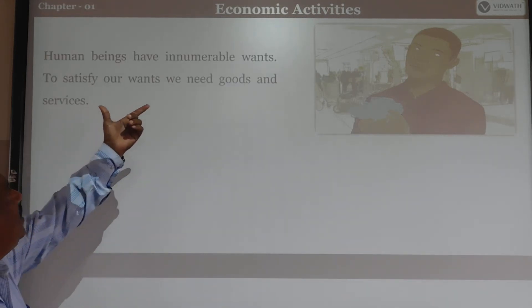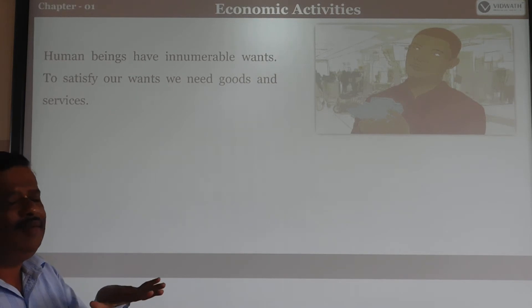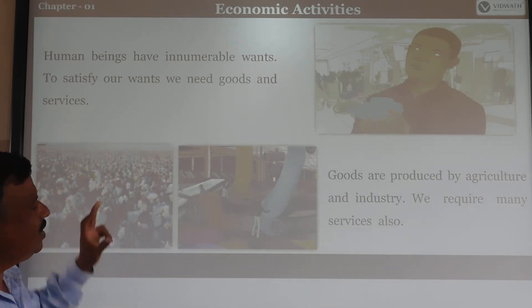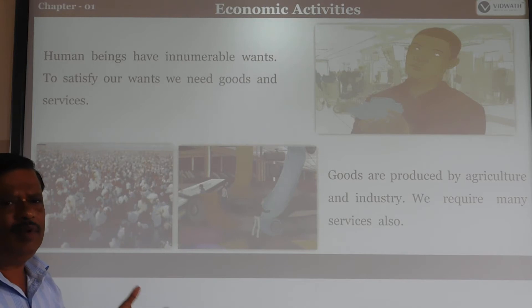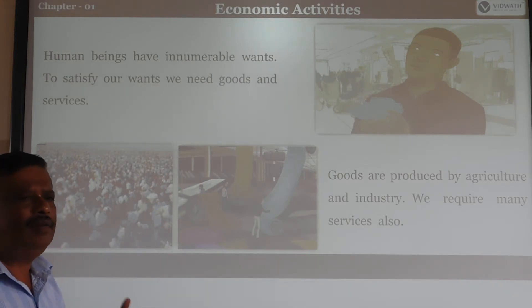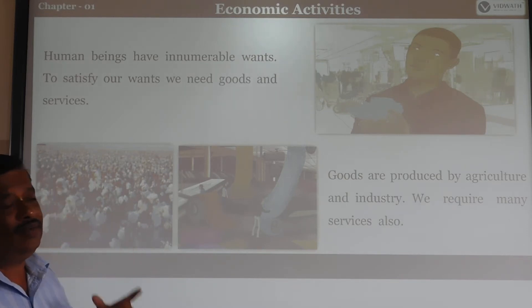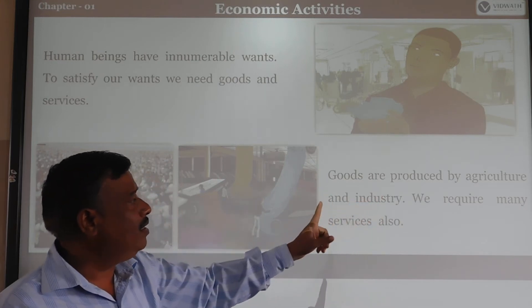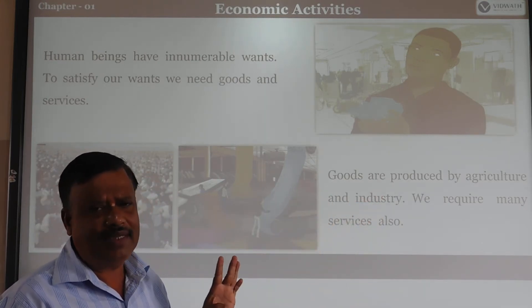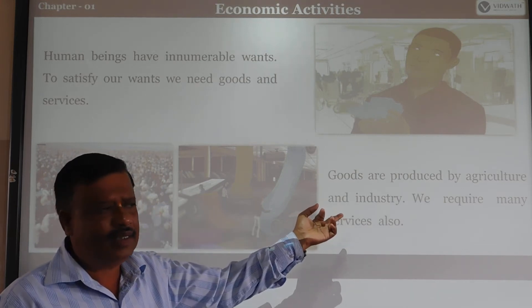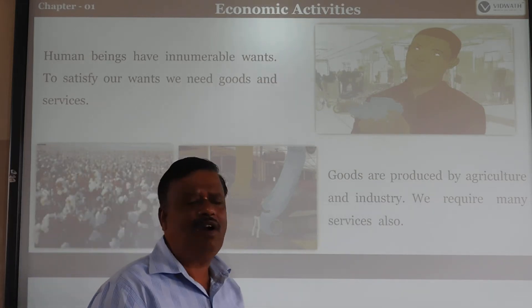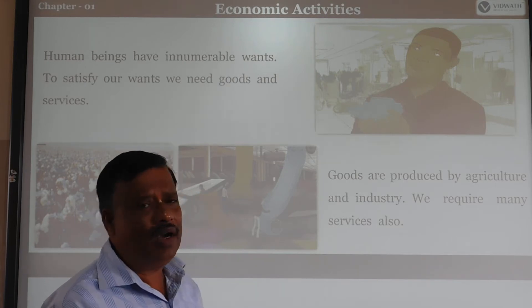Human beings have innumerable, unlimited wants. To satisfy our wants we need goods and services. Without goods and services we are not able to satisfy our needs. Goods and services are very essential to reach human beings. Goods are produced by agriculture and industries — the primary sector is agriculture, the secondary sector is industry, and the tertiary sector is the service sector. Selling and buying goods for profit is called trade, another word for business.